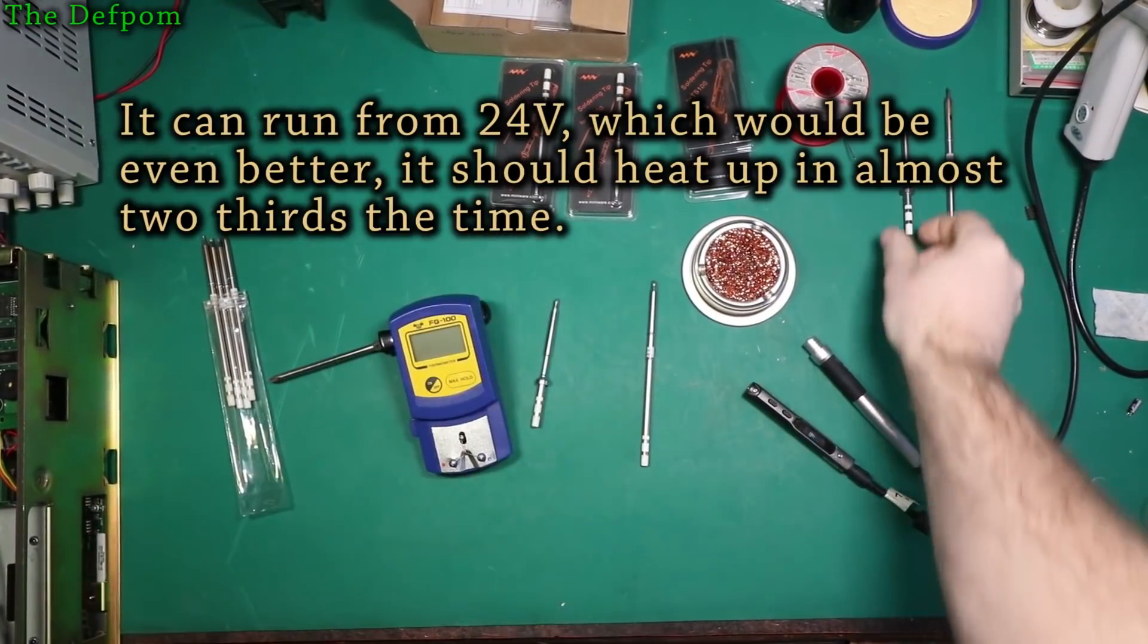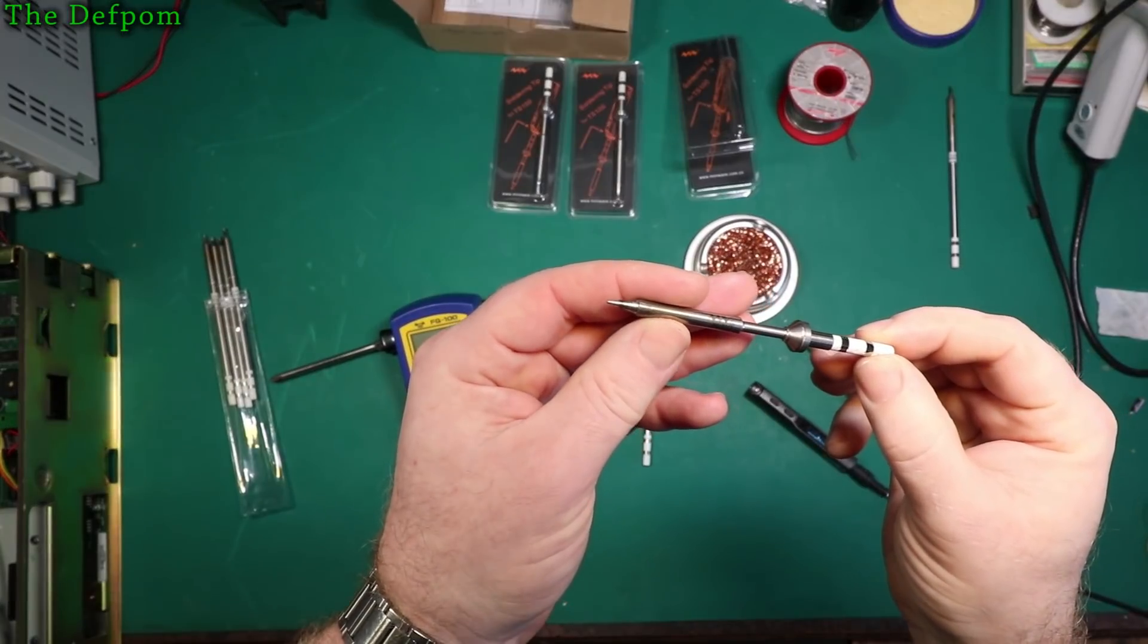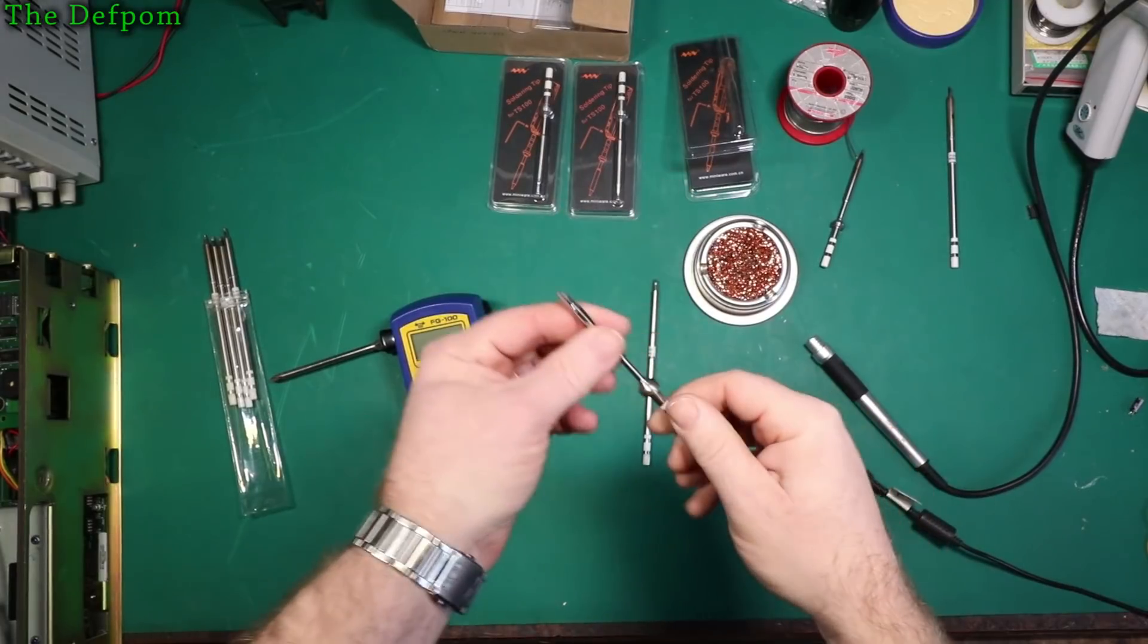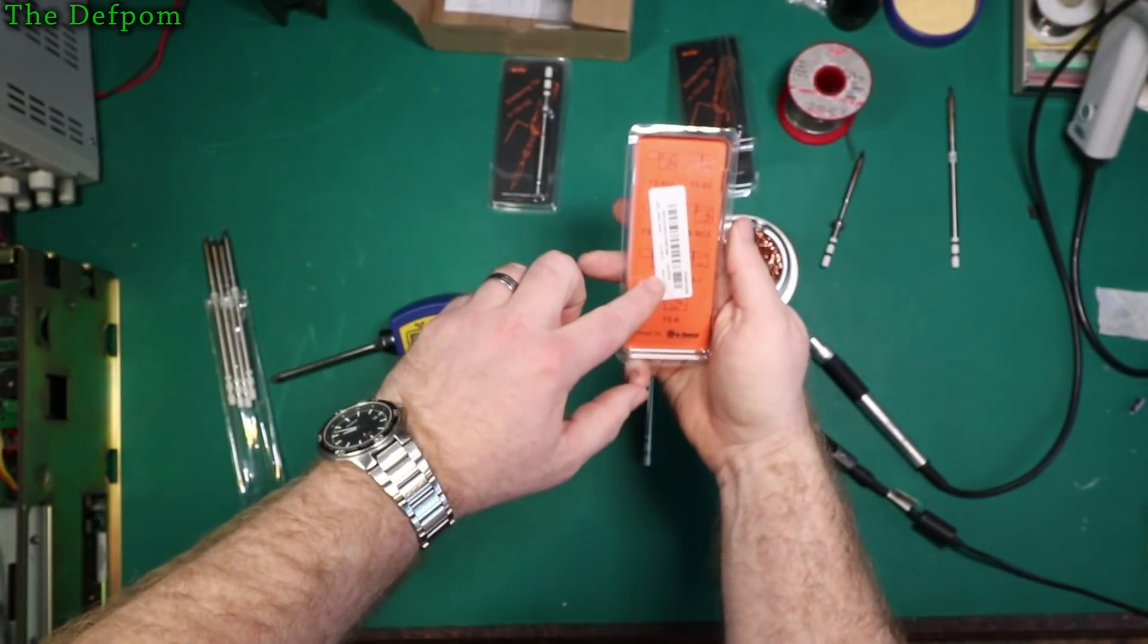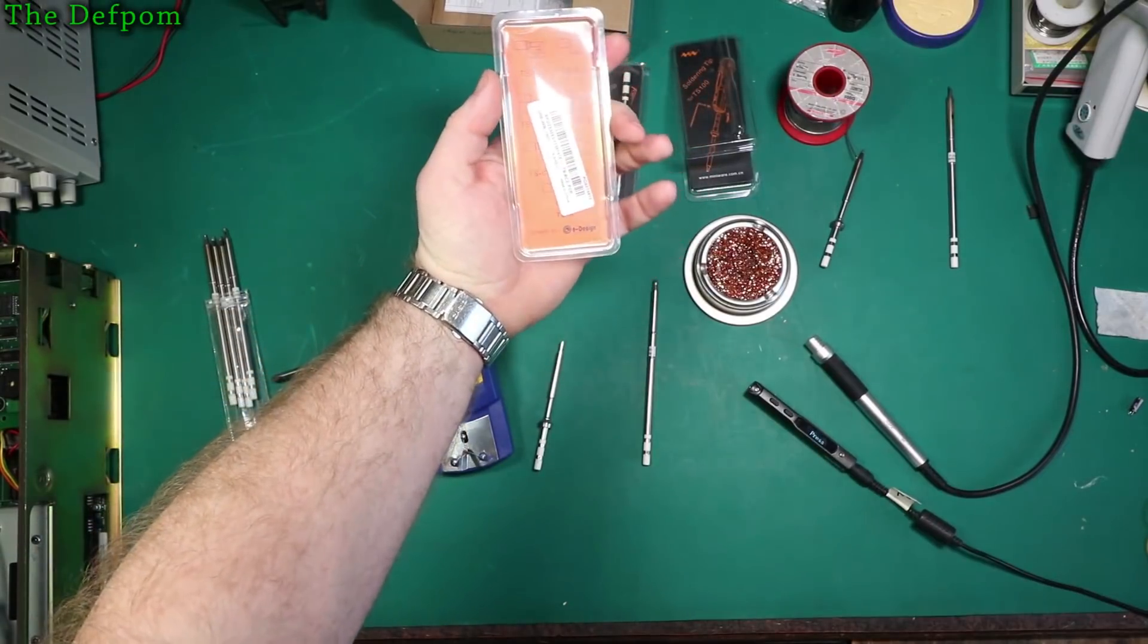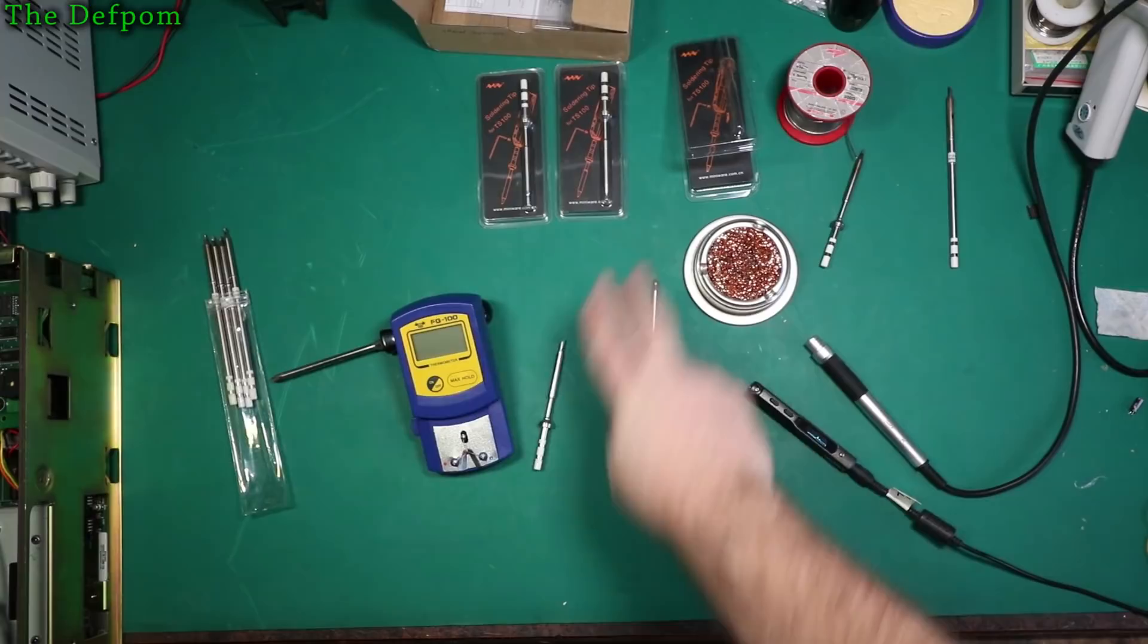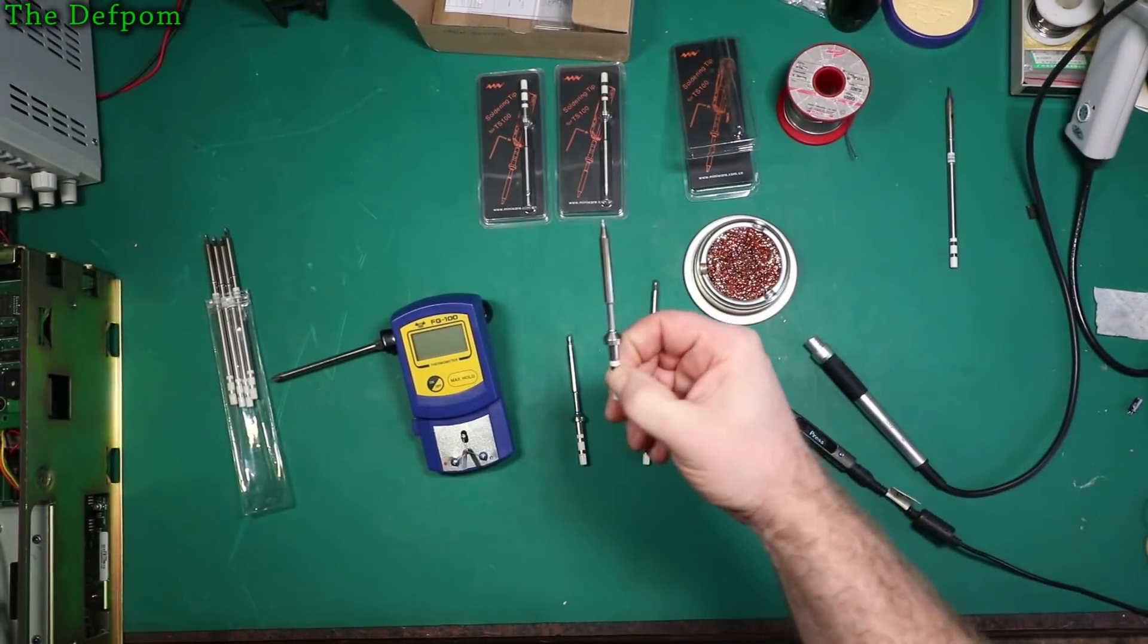You can see I've actually got a few different tips here. This is the original tip, I think, that came with my TS100. It says TS-B2, I think it says. I've also got these other three tips here: C4, TS-C4, and I've also got the TS-IPCK, which is like a very small conical, and the BC-2. Those are the tips I've got for the TS100. These I haven't actually used before, brand new, unused, because I've only used this particular tip on that iron.